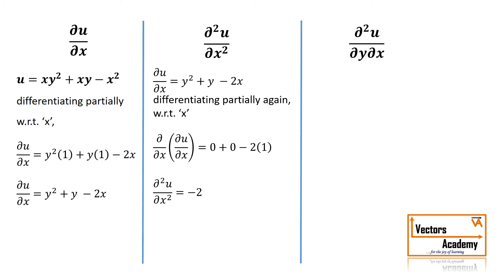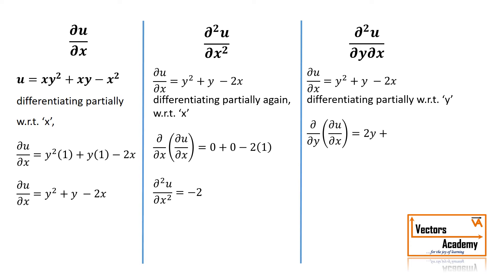Now suppose we need to find del squared u upon del y del x. This means first differentiate u partially with respect to x, and then differentiate that result partially with respect to y. We already have del u/del x. Differentiating with respect to y, the terms of x are treated as constant, so the derivative of minus 2x is 0. The derivative of y squared is 2y, and the derivative of y is 1. So del squared u upon del y del x equals 2y plus 1.